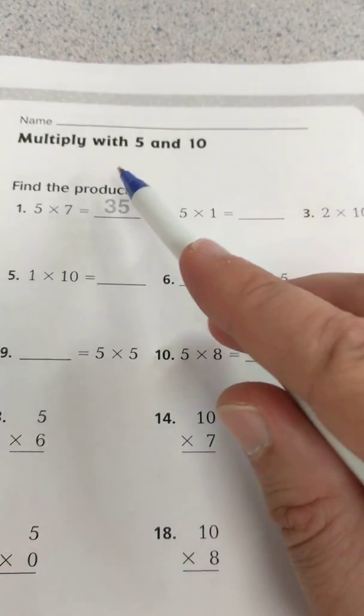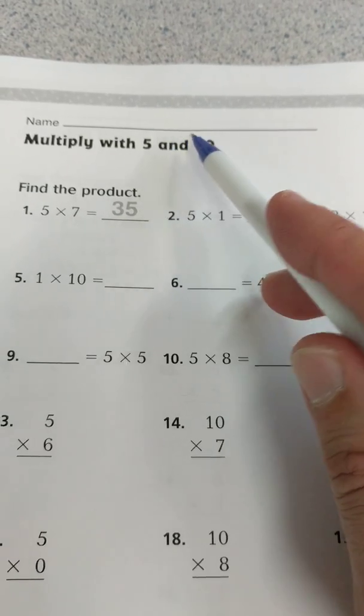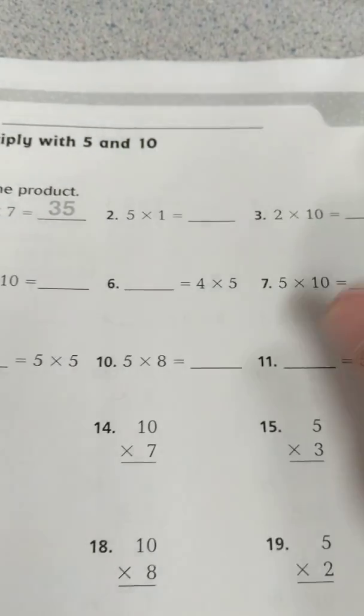Now, whenever you multiply by 5s, if you count by 5s, you should be able to get the answer. It's the only way you count it correctly. Same thing with 10. If you count by 10s, you should be able to do these.